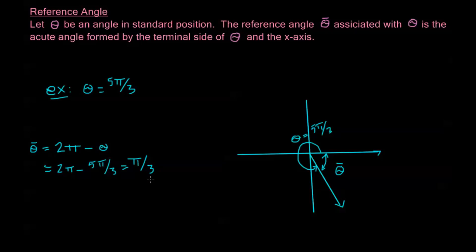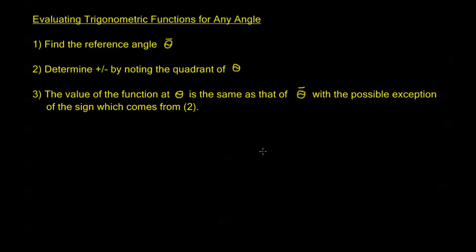As long as the angle is fully reduced — for example, 5π/3 is reduced whereas 10π/6 is not — we can easily find the reference angle using the denominator, just like we did with reference numbers. Angles with denominator 3, 6, or 4 follow the same pattern as in chapter 5. To evaluate a trig function for any angle: find reference angle theta-bar, determine plus or minus from the quadrant of the original angle theta, and the function value at theta equals the function value at theta-bar with the appropriate sign.